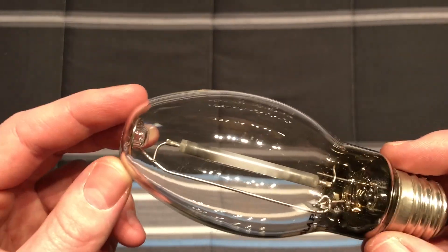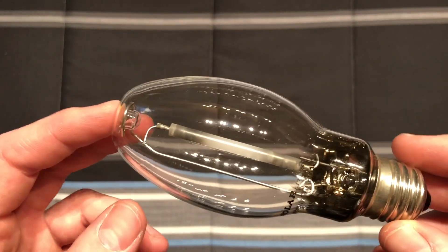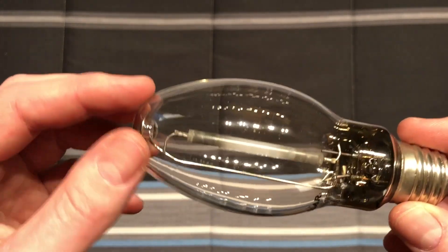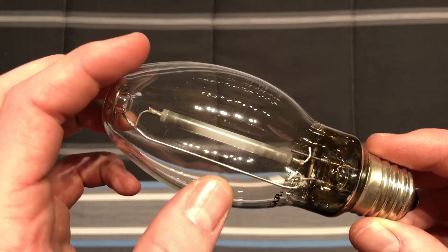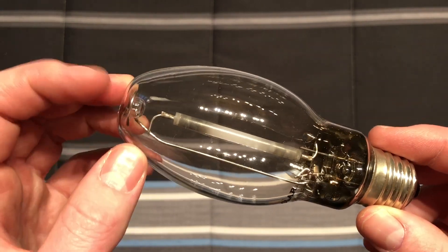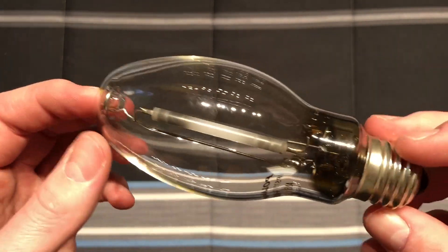Many companies like GE and Sylvania, I think Philips is the same way, they don't have the dimples on top, they just use the strength of the connector that goes to the top of the arc tube to help hold it there.